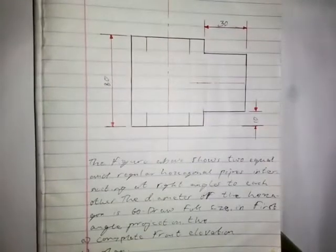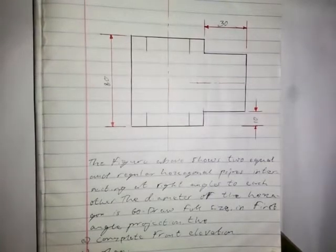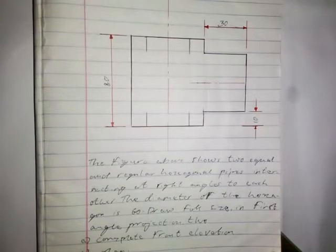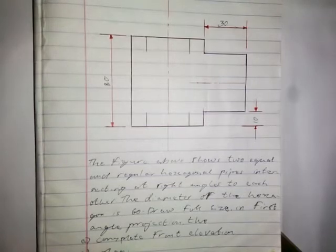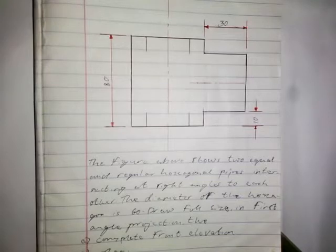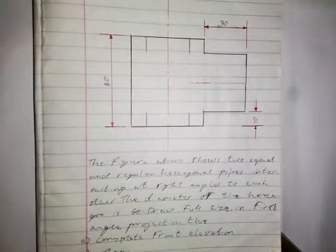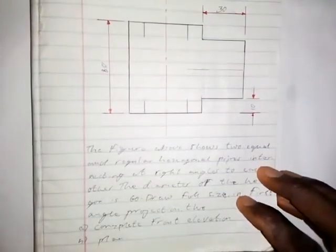Welcome to Grace Tutorial, where we solve technical drawing problems. This problem has to do with the intersection of two hexagonal prisms — a topic under intersection of solids. The figure shows two equal and regular hexagonal pipes intersecting at right angles. The diameter of the hexagon is 60 millimeters. Draw full size in first angle projection the complete front elevation.